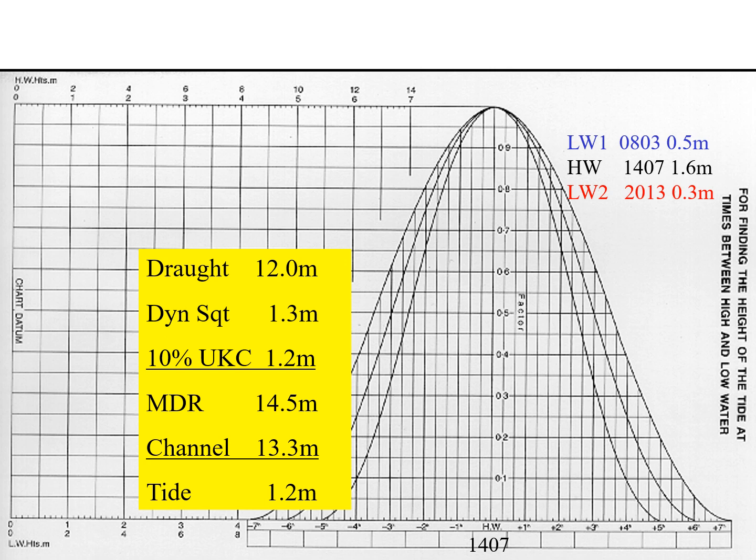Let's assume we have two low waters and one high water on this day. Low water 1 is at 0803 with a height of 0.5 meters, high water is at 1407 with a height of 1.6 meters, and low water 2 is at 2013 with a height of 0.3 meters. The next high water would occur the following day.